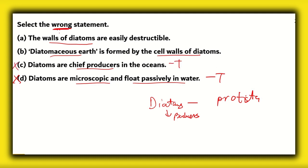Remember, we're looking for the wrong statement. Another interesting fact about diatoms is that they have cell walls made of silica. So, that means we can find silica present in what we call diatomaceous earth. So, that means the cell walls of diatoms, they drop to the bottom of the ocean once the diatom dies and then they form diatomaceous earth. So, diatomaceous earth is formed by the cell walls of diatoms is again a true statement.